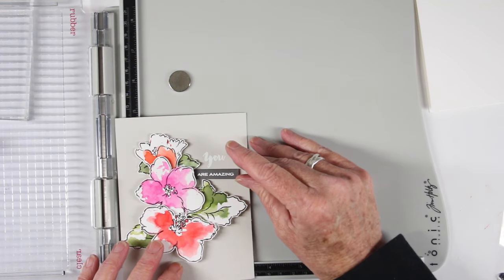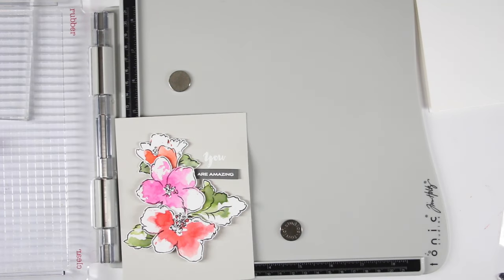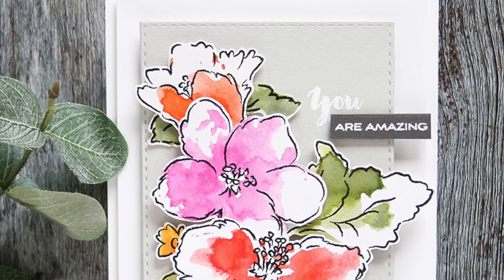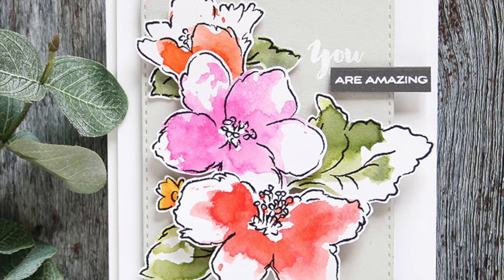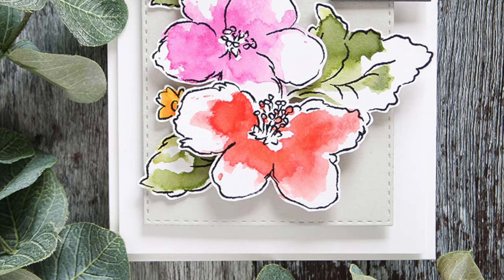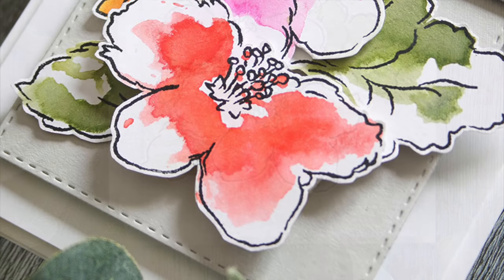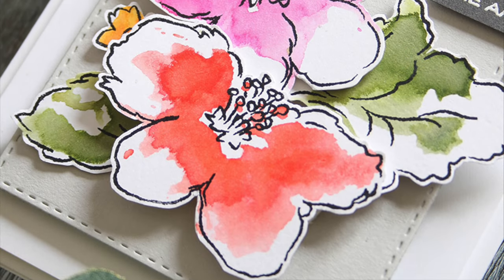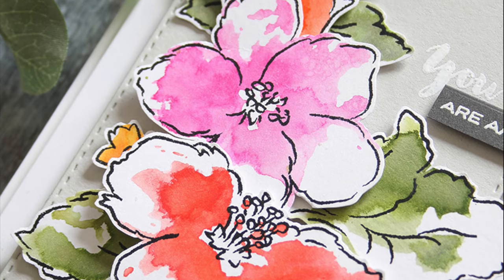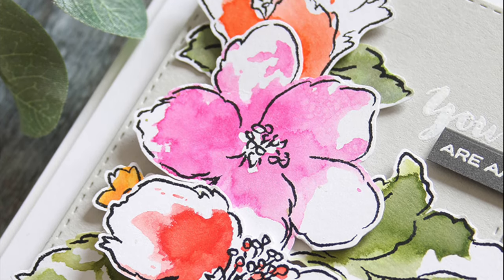And in my finished card I did use a Simon Says Stamp rectangle stitch die to trim down that fog cardstock. And then I mounted everything onto a panel of white and put that onto a top folding white card. I hope you've enjoyed my watercolor technique where I've stamped twice using the Altenew Hibiscus Bouquet flowers. And as always, thanks so much for watching.